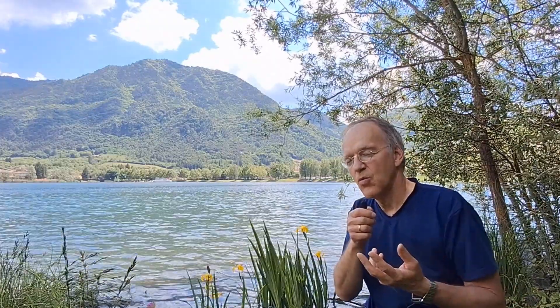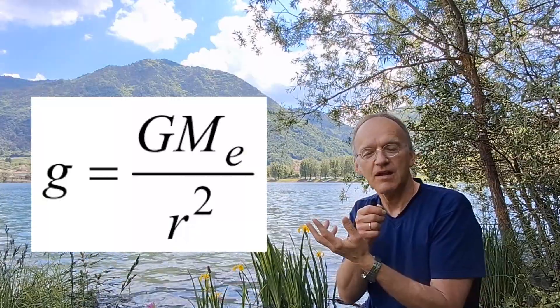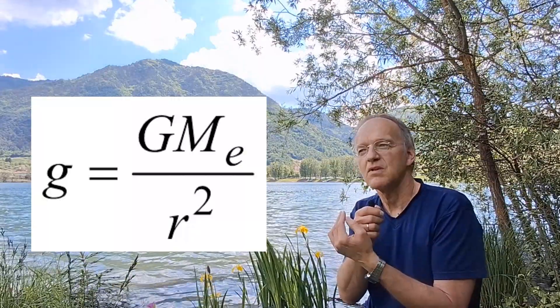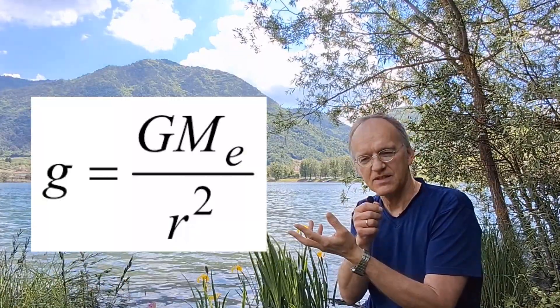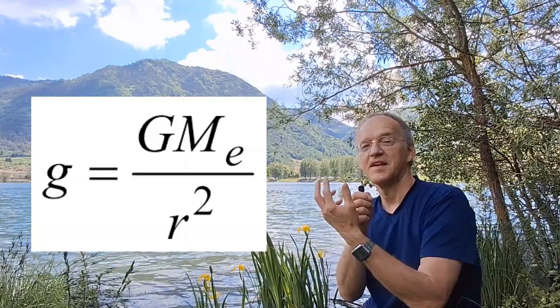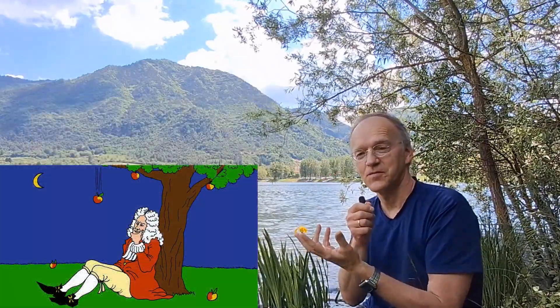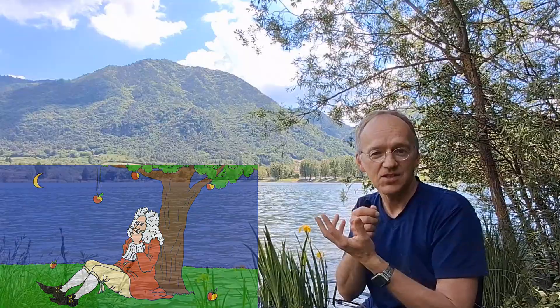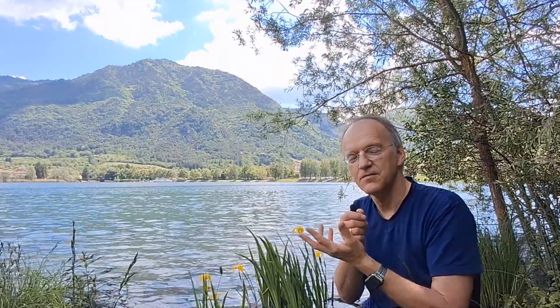If you go back to Newton, we see that 9.81 local gravity is related to a more general concept of gravity. The famous idea that the apple and the moon are attracted by the same force is a unification of celestial and earthly dynamics, and it explains local g.